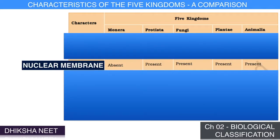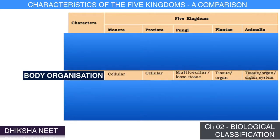Nuclear membrane: the nuclear membrane is absent in all organisms under kingdom Monera, while in the other four kingdoms — Protista, Fungi, Plantae, and Animalia — nuclear membrane is present. Body organization: in Monera and Protista, cellular organization is seen.